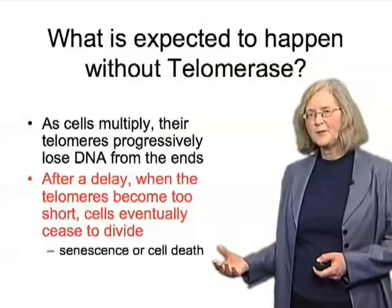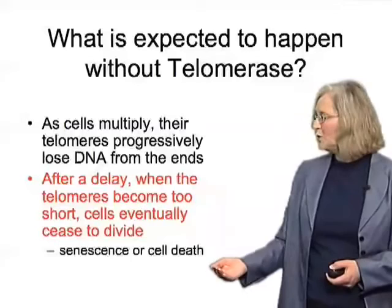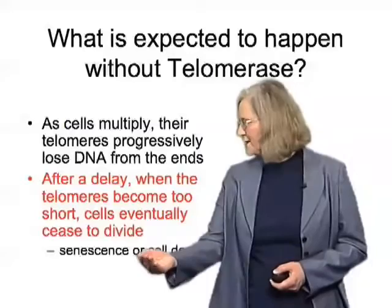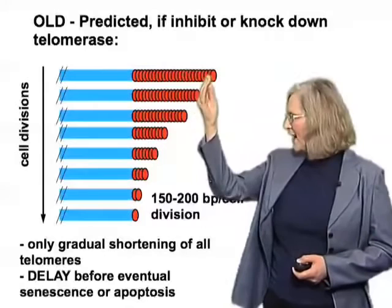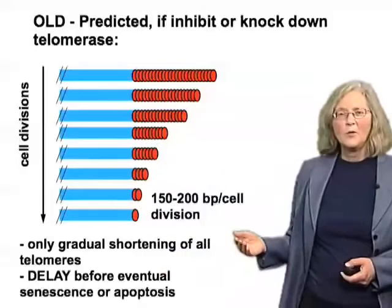The cells respond to those short telomeres by either a senescence response — where the cells simply won't replicate their DNA anymore — or a cell death response that can include an apoptotic response, which involves an active cell suicide program induced by dysfunctional telomeres. Whether it's senescence or cell death depends upon the cell type. So the simple prediction is: without telomerase, cells would have shorter and shorter telomeres, and after some number of divisions, eventually there would be cell death.